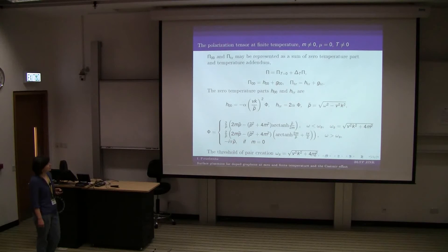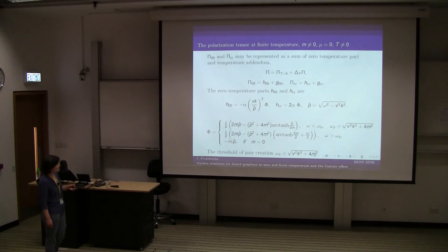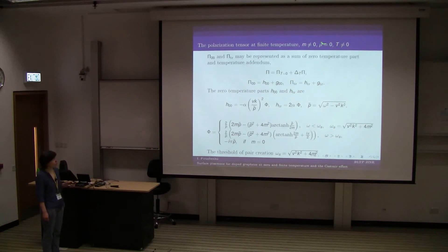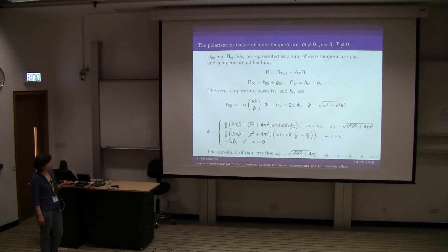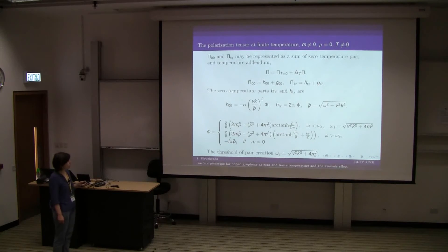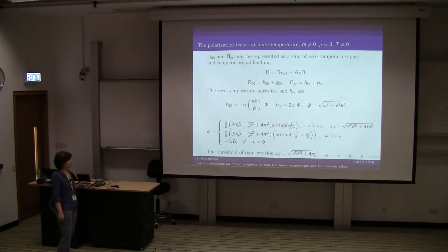In what follows, I will compare the pictures for non-zero temperature and non-zero mass gap. For the non-zero temperature case with zero chemical potential, we return to the polarization tensor and divide it into a zero-temperature part and a temperature-dependent part. We introduce the zero-zero component and the trace. The zero-temperature part gives exactly the formulas we had in the zero-temperature case with zero chemical potential. For the temperature-dependent part we have this function J, and the temperature dependence enters through the exponential factor, as usual.